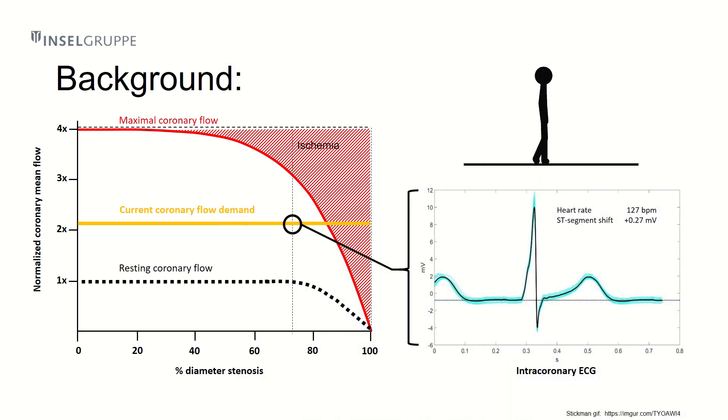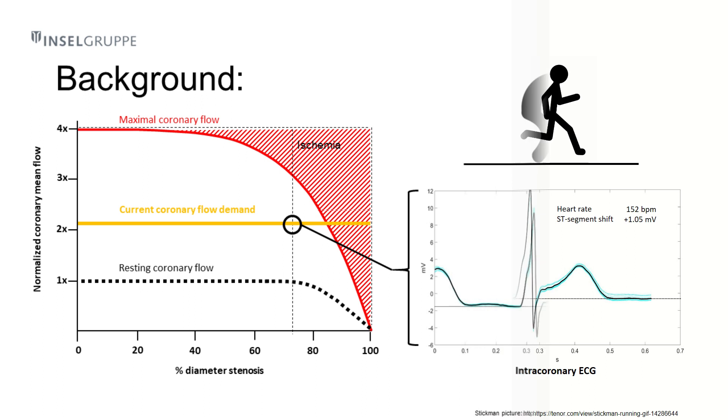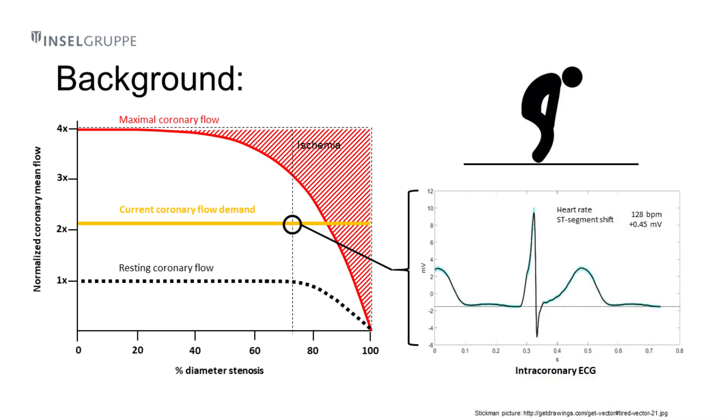With progressive pharmacologic stress, regional ischemia extended across the myocardial wall until transmural ischemia caused a remarkable ST segment shift. Transmural ischemia, however, resolves quickly after termination of stress.